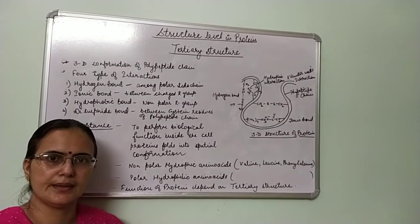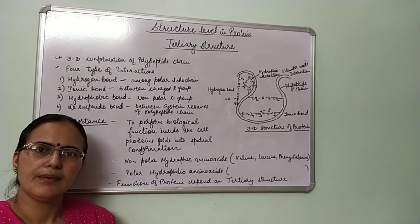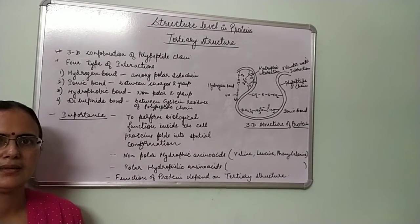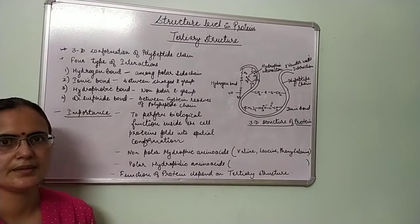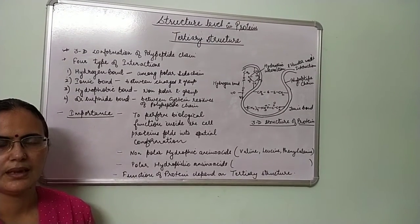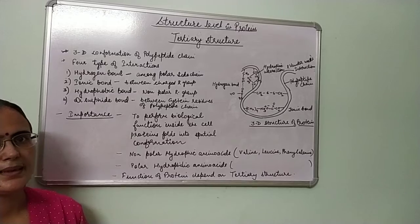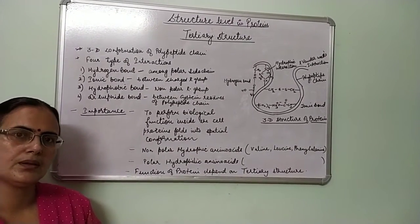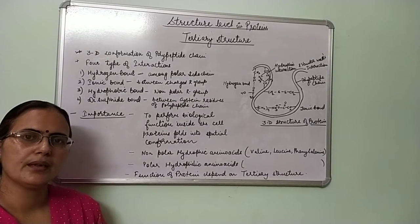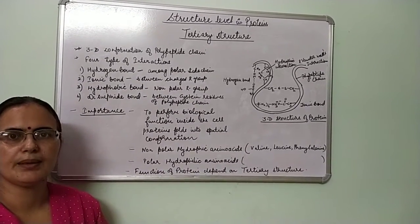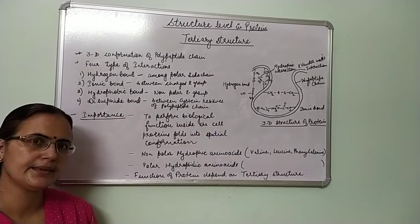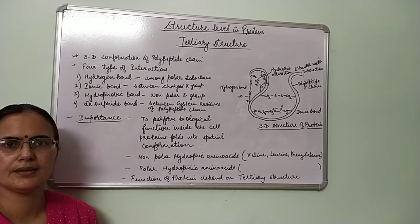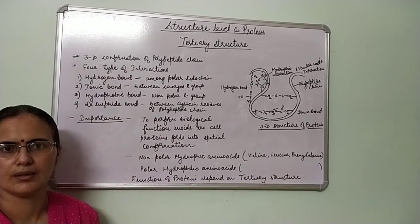Today we will study the tertiary structure of protein. In the earlier class we studied the primary structure and the secondary structure of protein. The primary structure of protein consists of the linear arrangement of amino acids, arranged in a linear manner, forming a polypeptide chain.